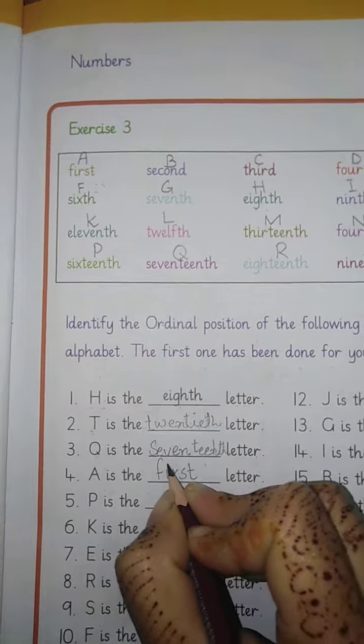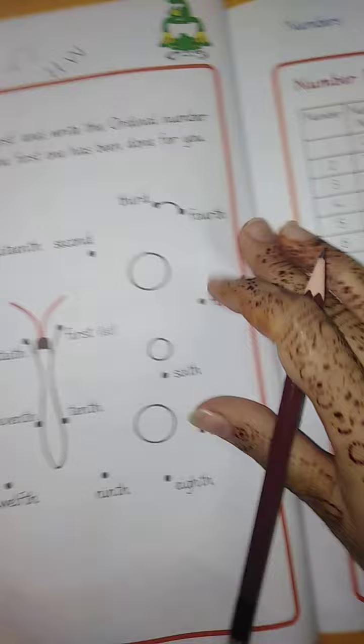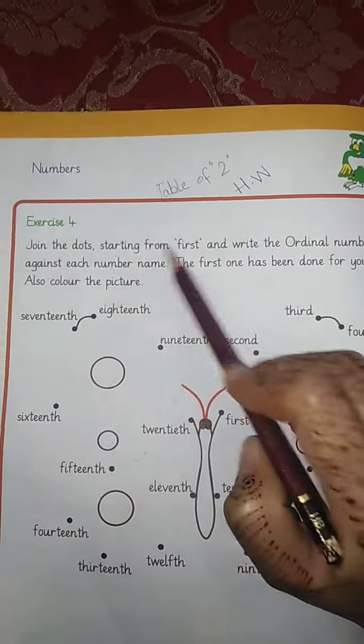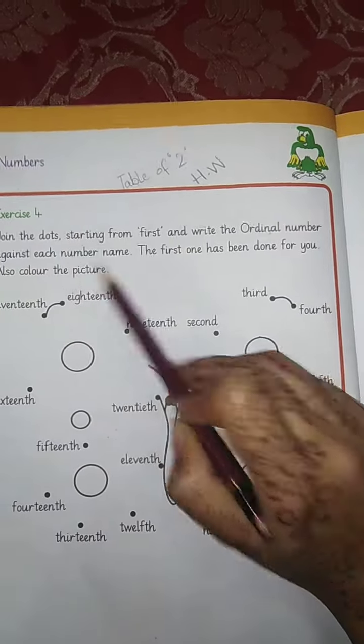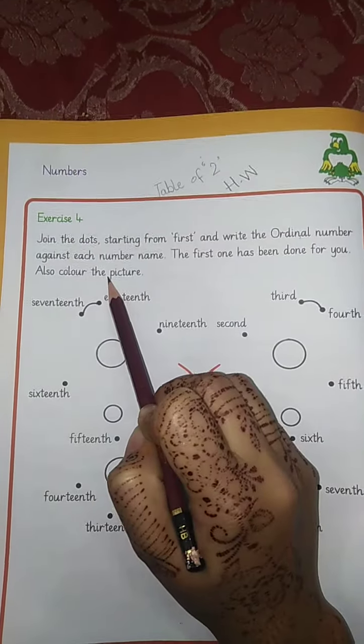You have to solve this. Next page, page number 5, exercise number 4. Join the dots starting from first and write the ordinal numbers against each number name. The first one has been done for you. Also color the picture.